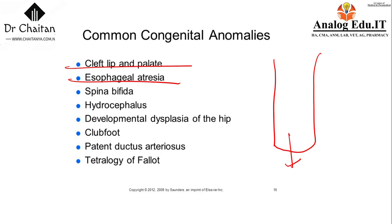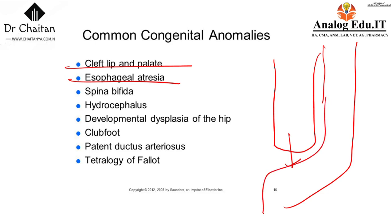This esophageal atresia can connect to the trachea through a tracheoesophageal fistula. We can connect to the trachea through a tracheoesophageal fistula — this is a tracheoesophageal fistula.